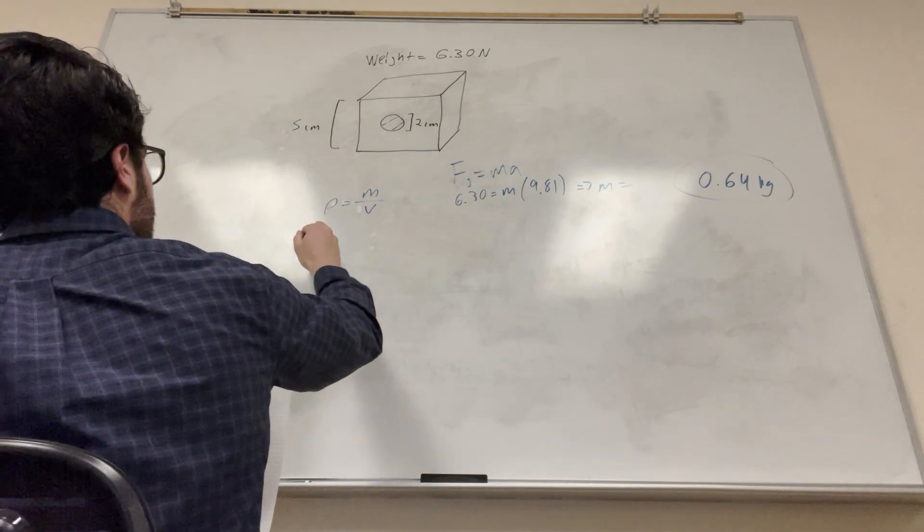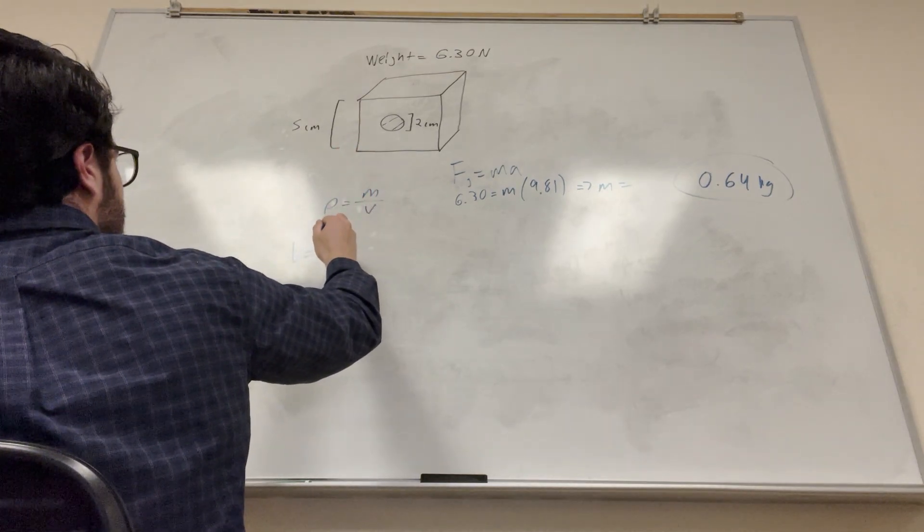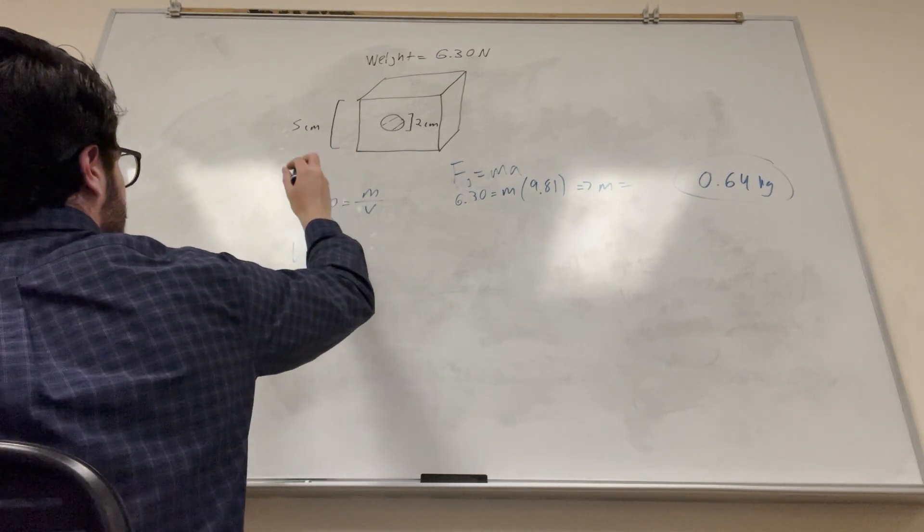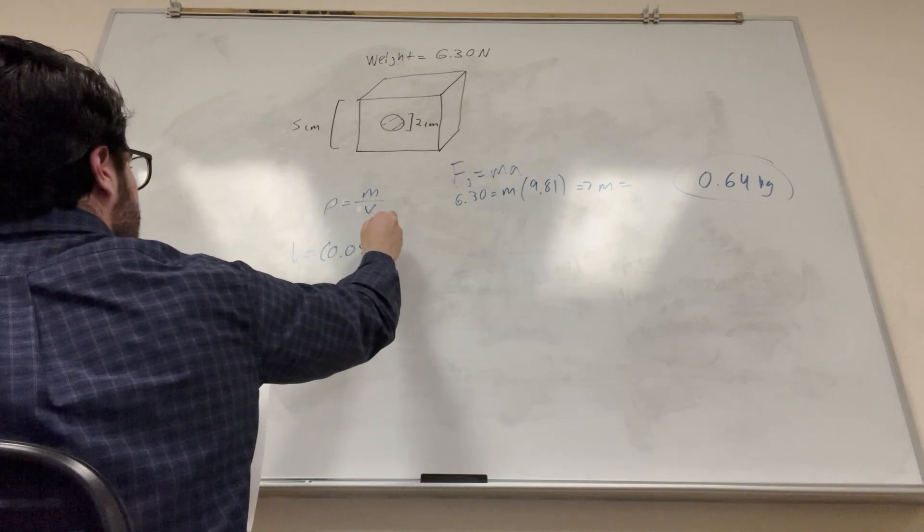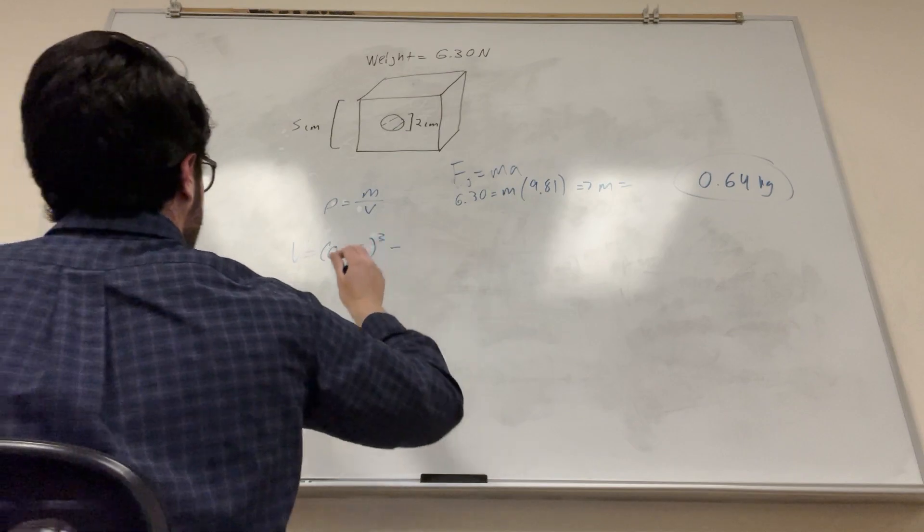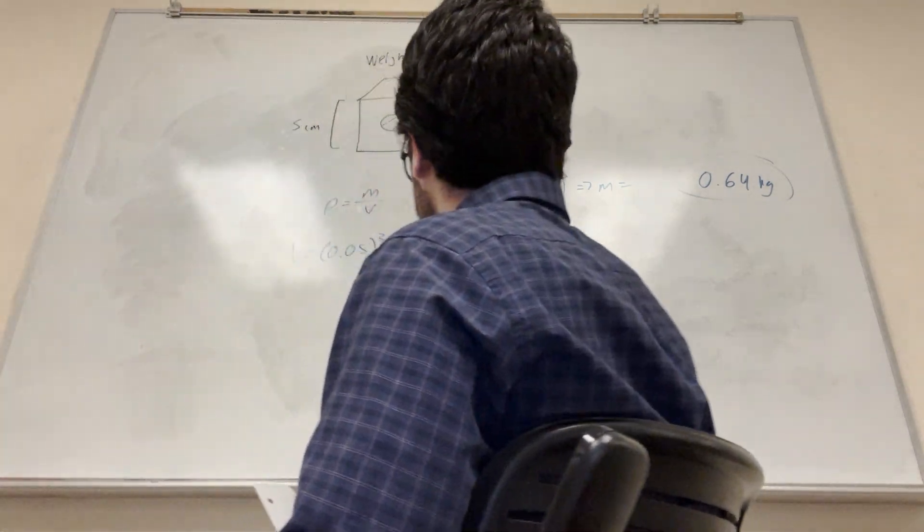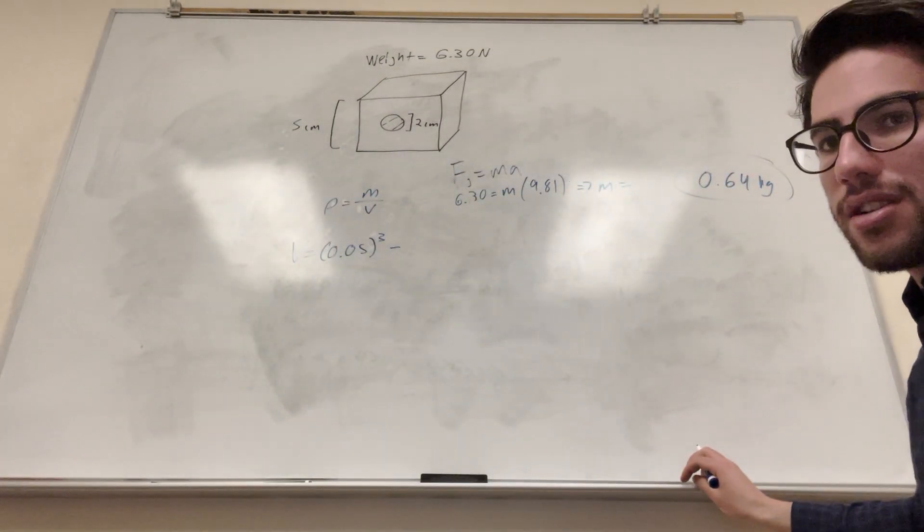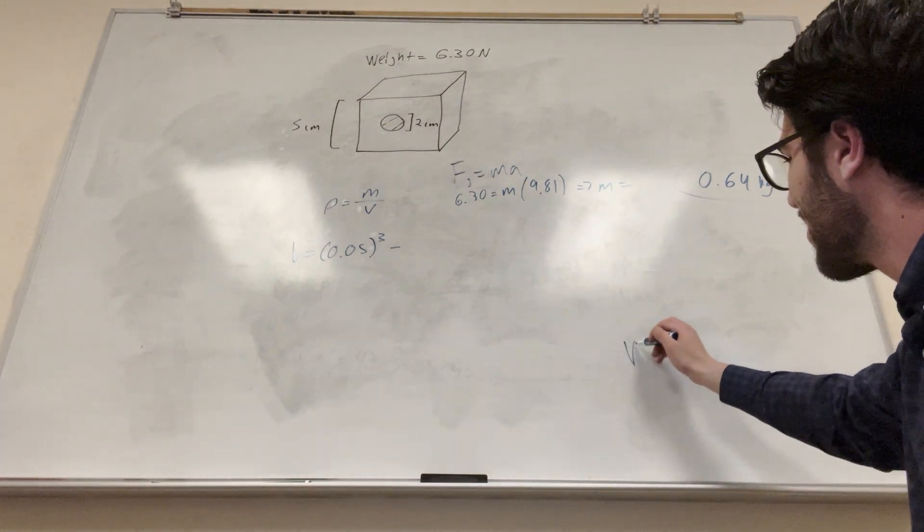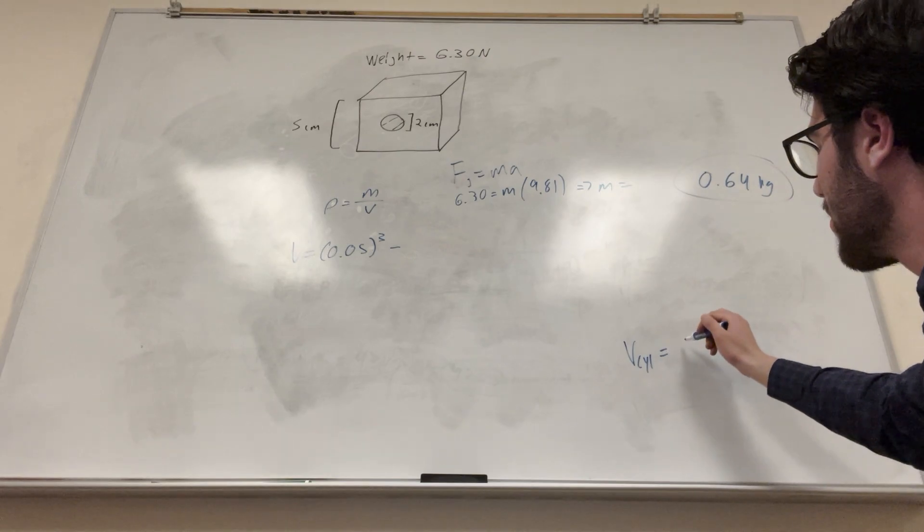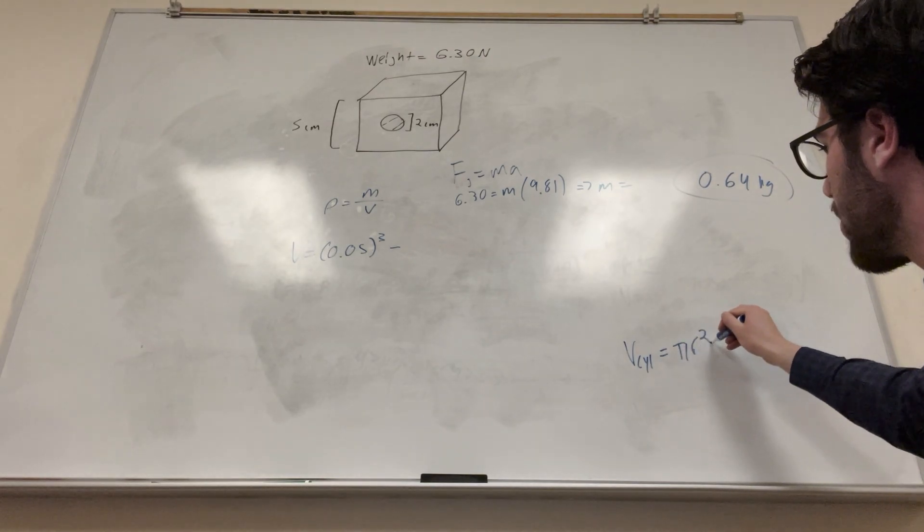So volume of the cube is equal to, but it's in centimeters, so we're going to need to convert to meters, so it's going to be 0.05 meters cubed, but then we're going to need to subtract the center part. So the volume of a cylinder is equal to pi radius squared times length.